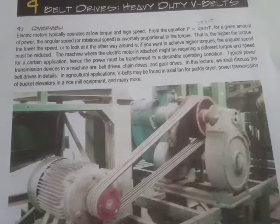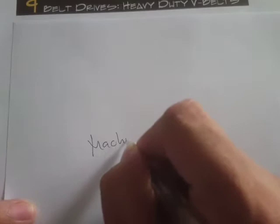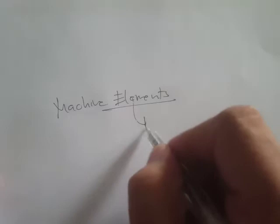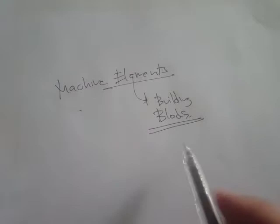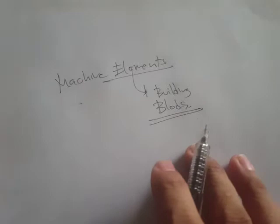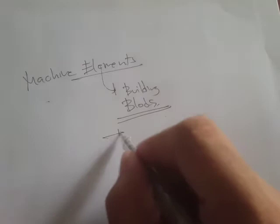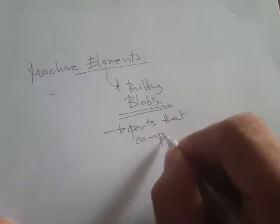Welcome back to ABE 153. We are now moving on to the third part of our course topic: machine elements. The term 'machine elements' refers to something like the building blocks — in the context of machinery or equipment, we are referring to the parts and assemblies that comprise the machine.